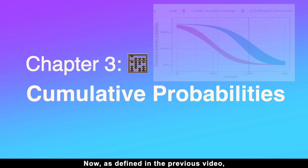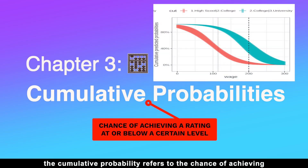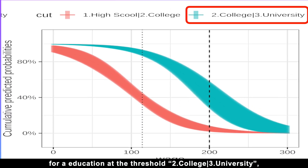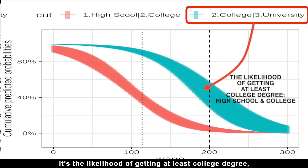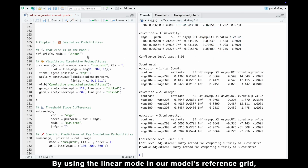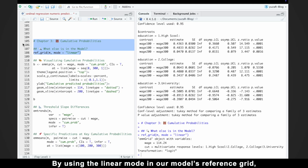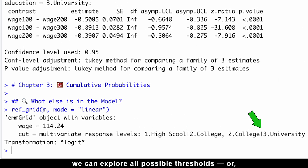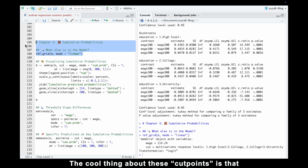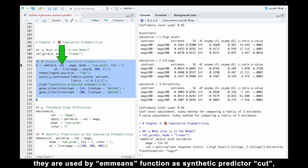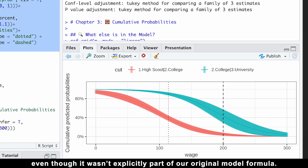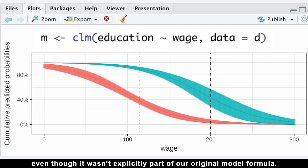As defined in the previous video, cumulative probability refers to the chance of achieving a rating at or below a certain level. For example, at the college-university threshold, it's the likelihood of getting at most a college degree, which in our case includes both high school and college. By using the linear mode in our model's reference grid, we can explore all possible thresholds — or, as the emmeans package calls them, cut points. These cut points are used by the emmeans function as a synthetic predictor, even though it wasn't explicitly part of our original model formula.